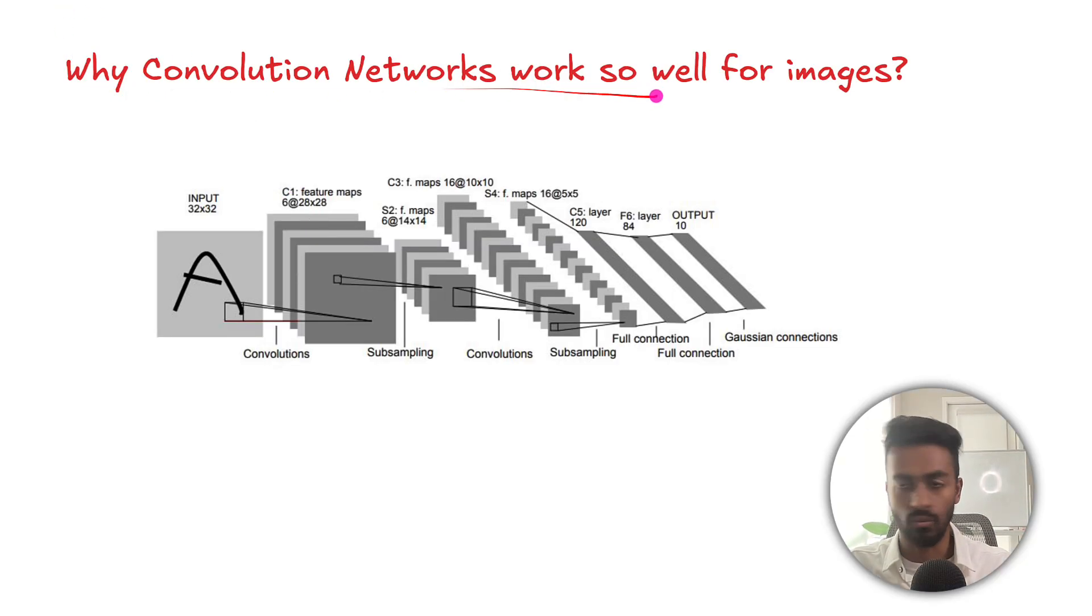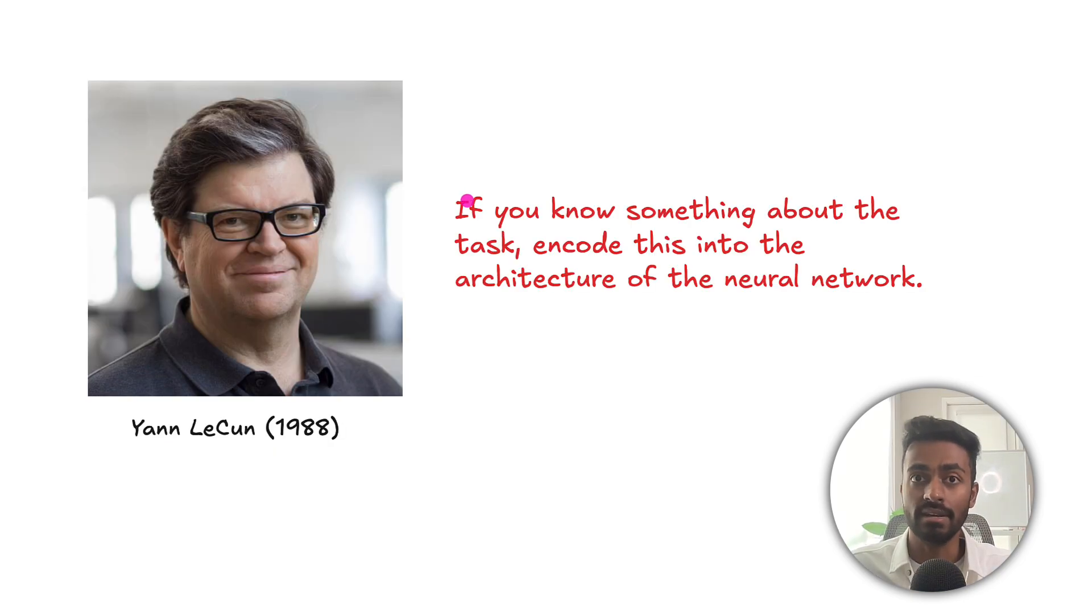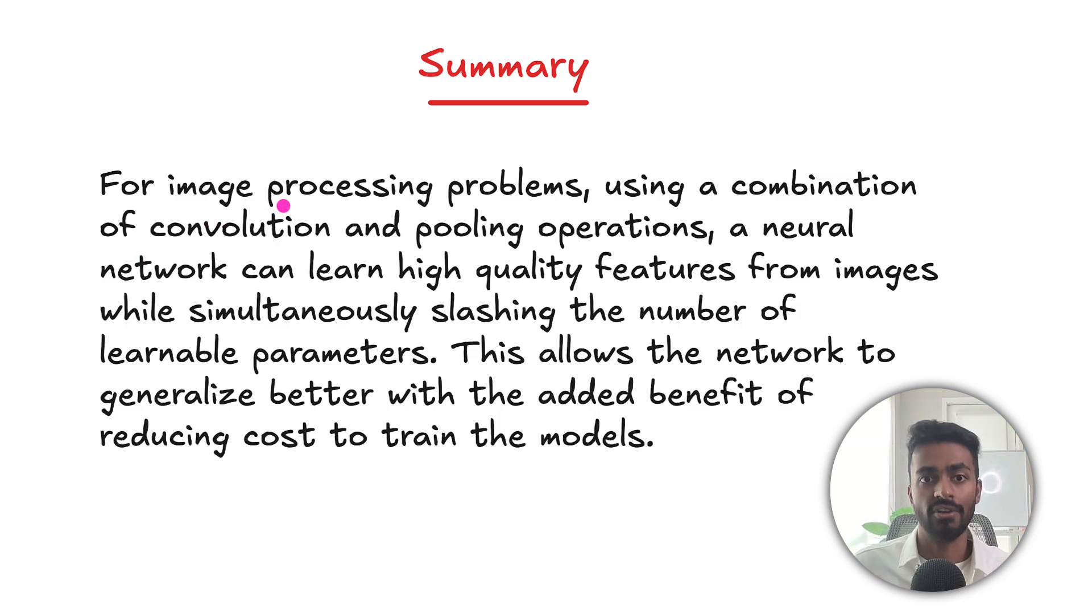So we took a look at why convolution networks work so well for images. We saw that there could be potential issues of too many parameters that could lead to the model memorizing training data, but also too few parameters that the model is not able to represent the desired function. And so we need to somehow balance these two issues. Now one way to deal with this is take advantage of the fact that we have input images and we want to encode this fact into the architecture of the neural network. And so we make use of convolution layers and pooling layers for these reasons. We also saw that in summary for image processing problems, using a combination of these operations, a neural network can learn high quality features from images while simultaneously slashing the number of learnable parameters. And this allows the network to generalize better with the added benefit of reducing cost to train models.